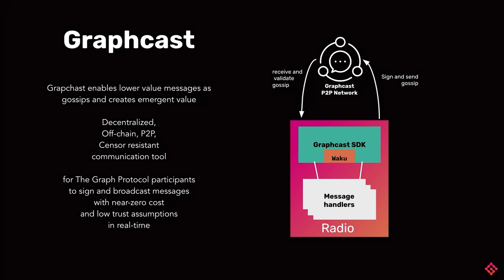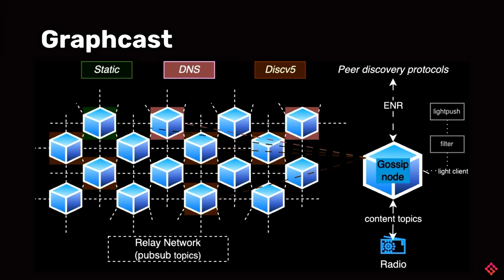This structure allows very different things to happen — whatever you can imagine, you can try to make it fit in this structure. You might be wondering how a node propagates throughout this network. Once you are running a gossip node, you will be pushing messages to the relay network, which is specified by the pub-sub topic. Say we are running a node locally, connected to a bunch of other peers, and we want to publish a message that has a content topic and a pub-sub topic.